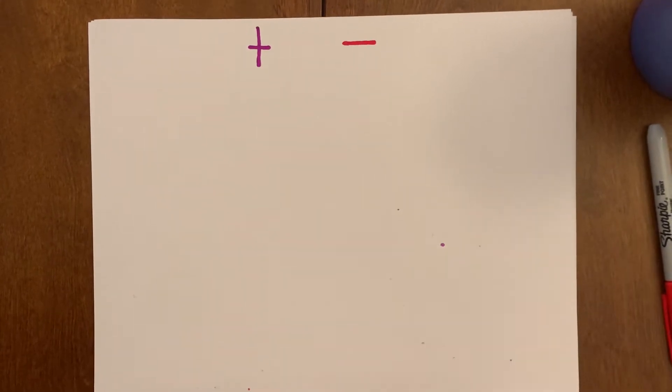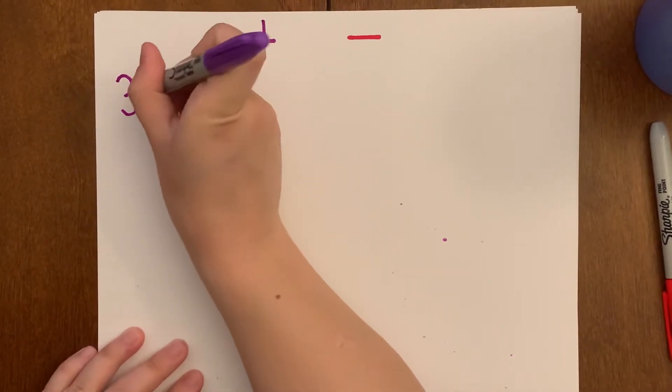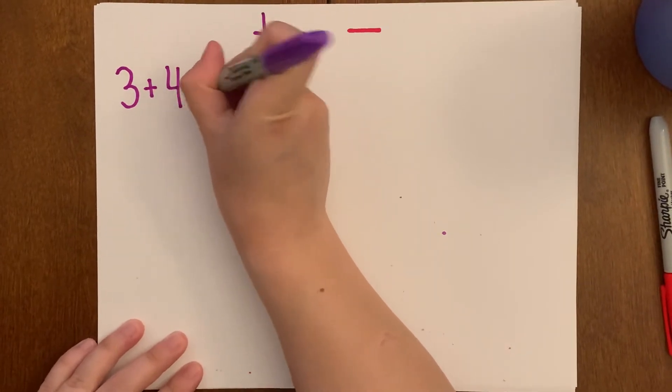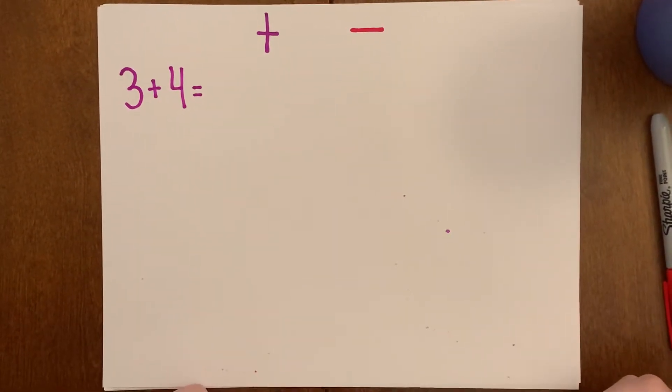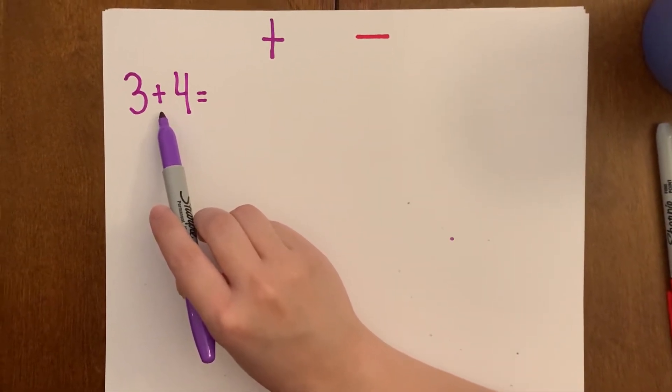So let's start off with one together. Here we go. I have 3 plus 4. Let's check our symbol. Is it a plus or minus? Plus, yes.